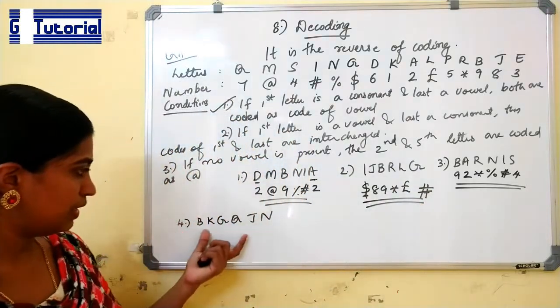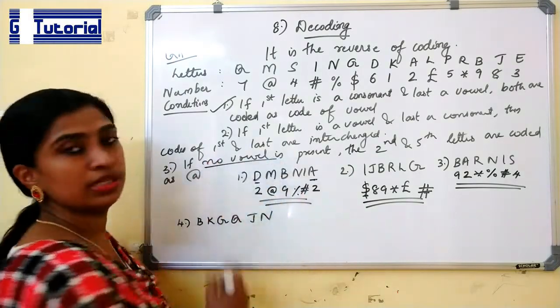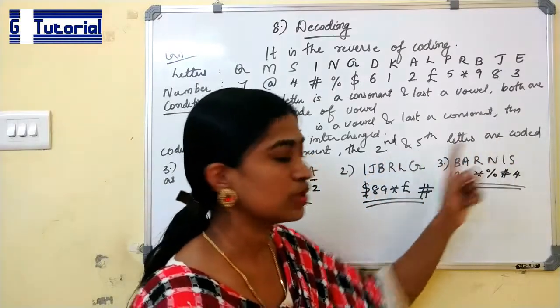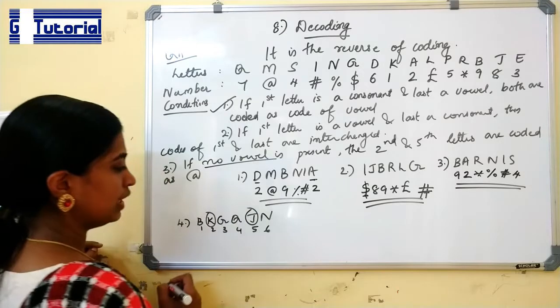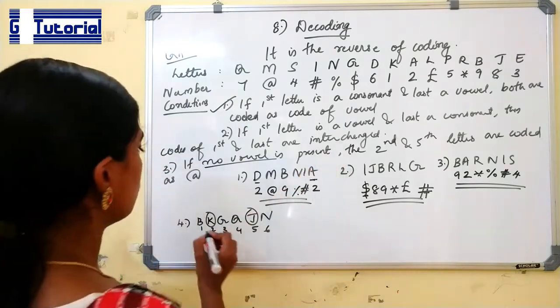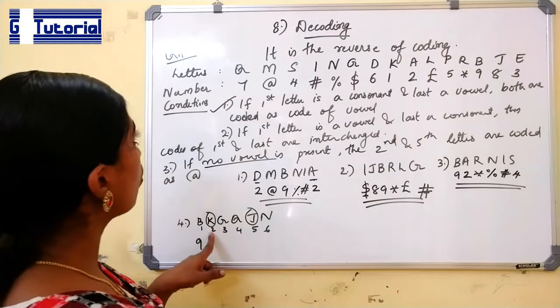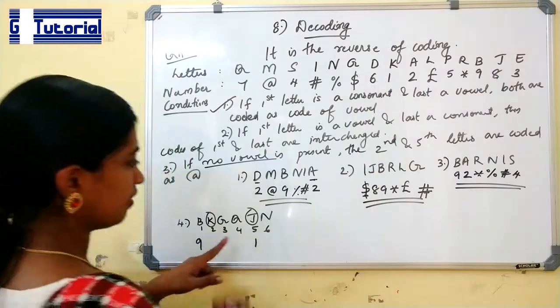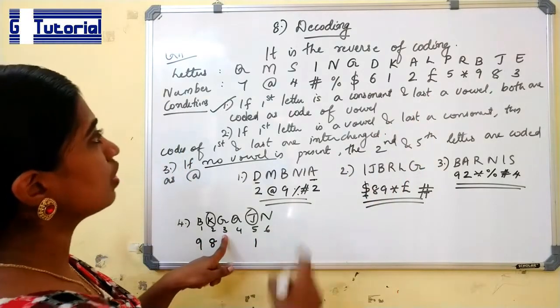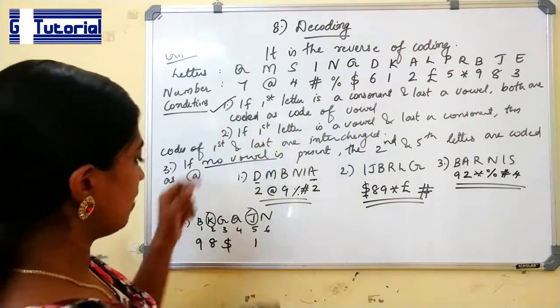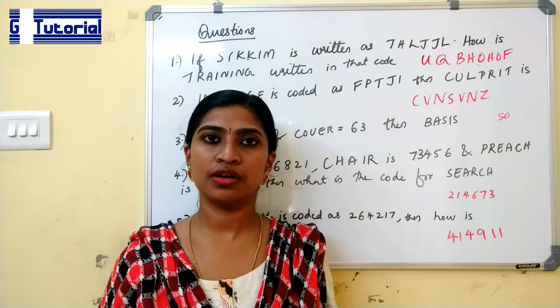And finally, the last question. BKGQJN. This follows the third condition. That is, there is no vowels. So the second and fifth letters' codes are interchanged. 1, 2, 3, 4, 5, 6. These two letters' codes are interchanged. What is the code for B? B's code is 9. K's code has to be written for this fifth one, J's, as J's code. So code of K is 1, it is written here. What is the code for this fifth letter J? This 8, it is written here. Then G's code is dollar, Q's code is 7, N's code is percentage. This is the answer for this. We discussed all the eight models from coding and decoding.